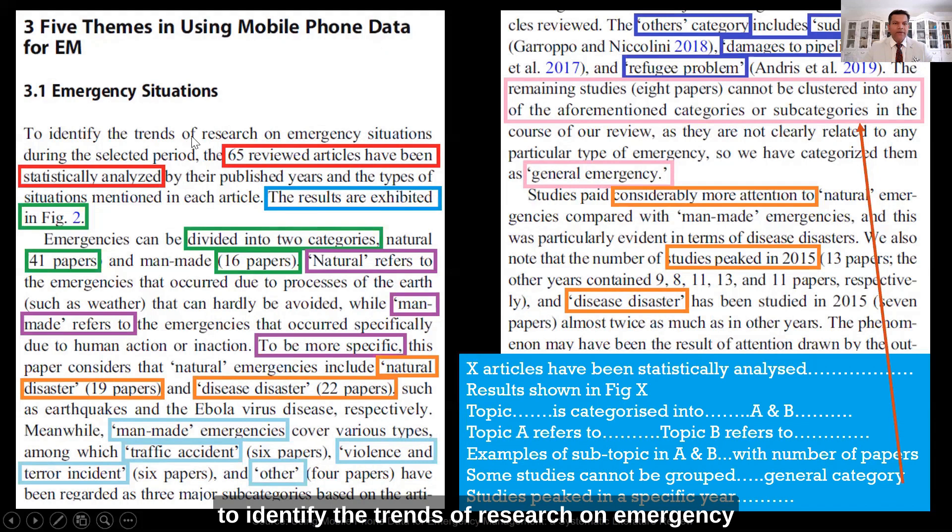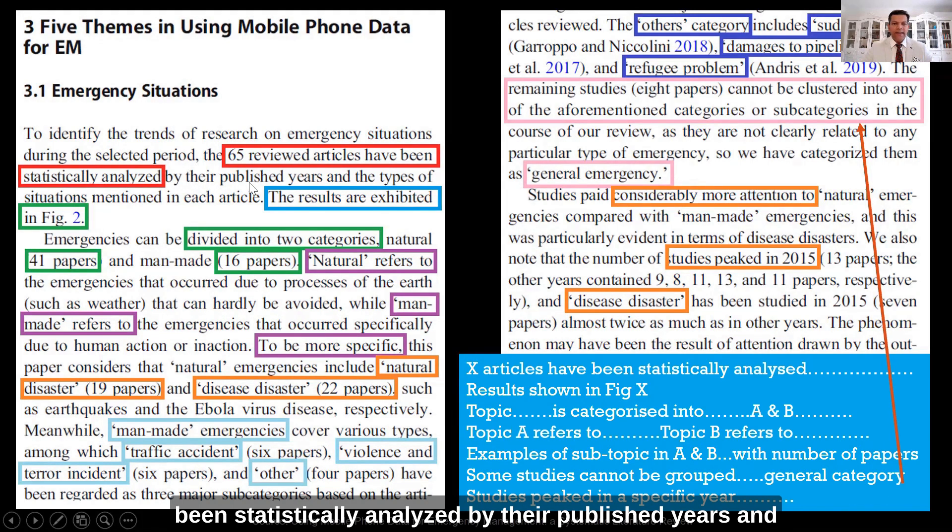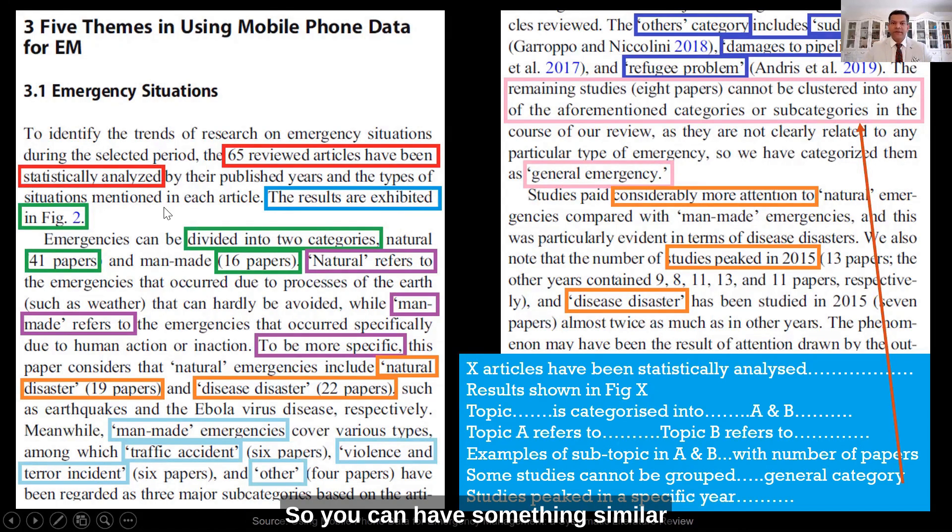To identify the trends of research on emergency situations during the selected period, 65 articles were statistically analyzed by their published years and type of situations mentioned in each article. The results are shown and exhibited in figure two. So you can have something similar when you begin your writing.